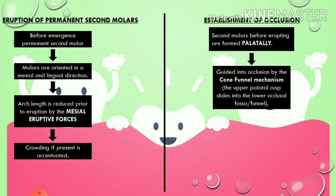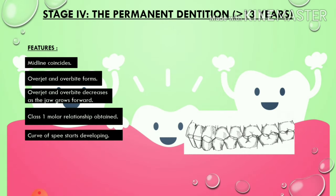Moving on to eruption of permanent second molars. Before emergence, permanent second molars are usually oriented in a mesial and lingual direction, which reduces arch length prior to eruption due to mesial eruptive forces — sometimes causing crowding. Once the permanent second molars erupt, there is establishment of occlusion. These molars are guided into occlusion by the cone-funnel mechanism, where the upper palatal cusp acts as the cone sliding into the lower occlusal fossa acting as the funnel.